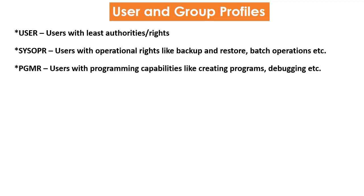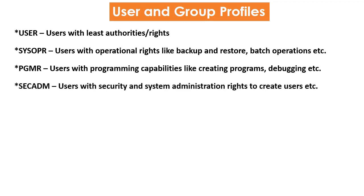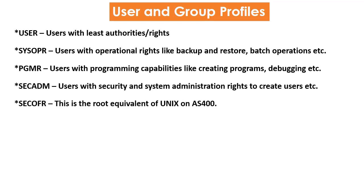Number three is *PGMR — users with programming capabilities like creating programs, debugging, etc. Number four is *SYSADM — users with security administration authorities to create users and general administration, etc. Number five is *SECOFR — this is the root equivalent of Unix on AS/400.